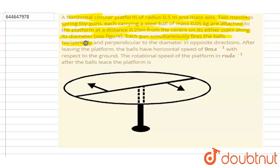...fires the ball horizontally and perpendicular to the diameter in opposite directions and leave the platform. The balls have a horizontal speed of 9 meters per second with respect to the ground. The rotational speed of the platform in radians per second after the balls leave the platform.